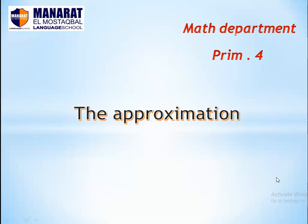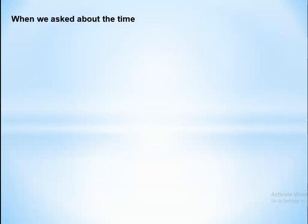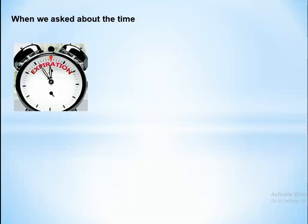Hi, my dear students. Today we are going to talk about approximation. When I ask you about the time and the clock looks like this, you can tell me that it's almost 12, because it's not exactly 12 — it's 5 to 12. So we can say approximately 12. The clock is approximately 12 o'clock.